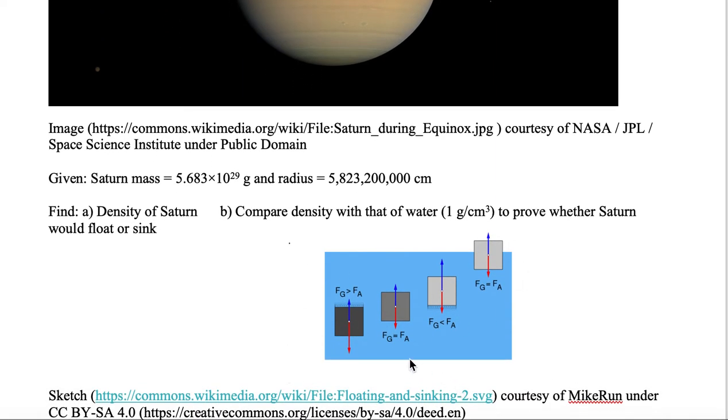Here we're looking at a cartoon of various different blocks, three of which are under the water, and one of which is bobbing on the top. The density of the block that is bobbing on the top is less than that of the density of water. Hence, it floats.